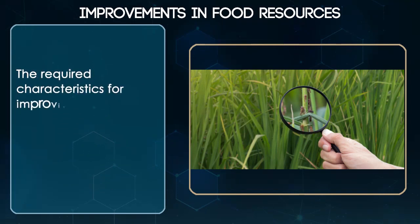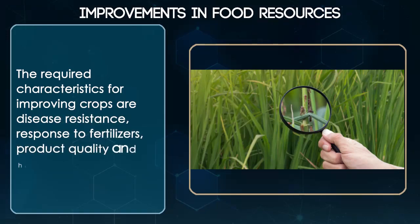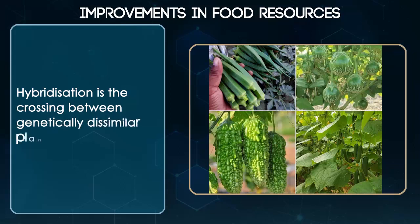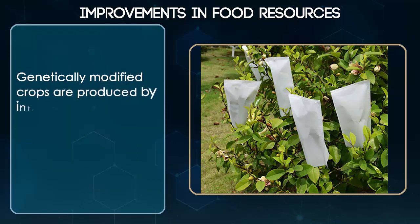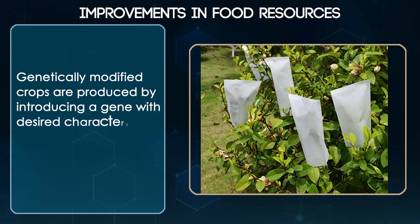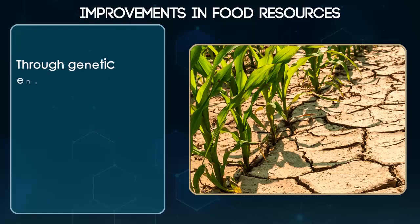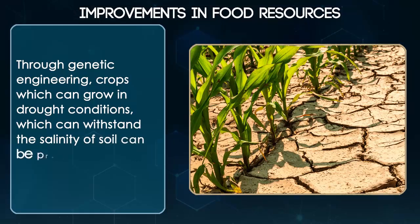The required characteristics for improving crops are disease resistance, response to fertilizers, product quality and high yields. Hybridization is the crossing between genetically dissimilar plants. Genetically modified crops are produced by introducing a gene with desired characters into the crop plants using genetic engineering methods. Through genetic engineering, crops which can grow in drought conditions and which can withstand the salinity of soil can be produced.